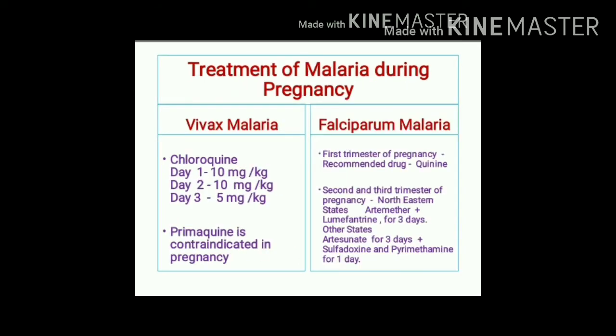For treatment of malaria in pregnant women: for vivax malaria, chloroquine is safely given for three days as per standard guidelines, but primaquine must not be given as it is contraindicated in pregnancy. For falciparum malaria, artemisinin combination therapy is contraindicated in the first trimester; quinine is used instead.